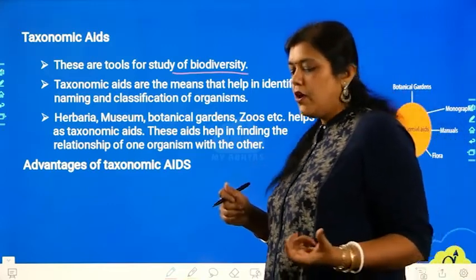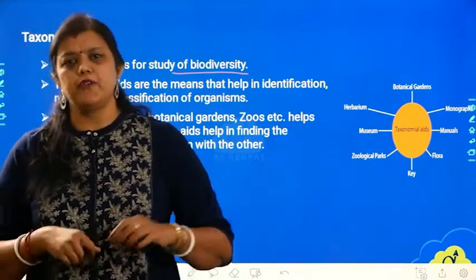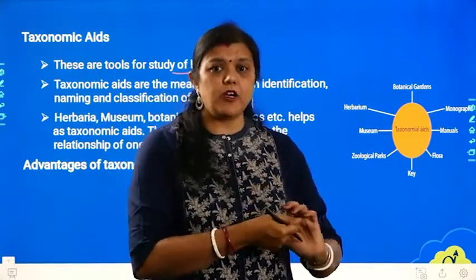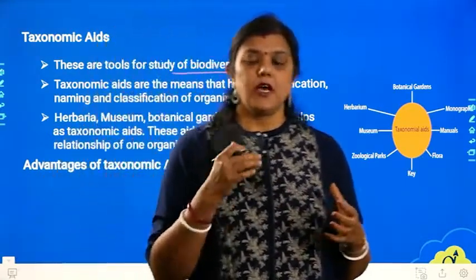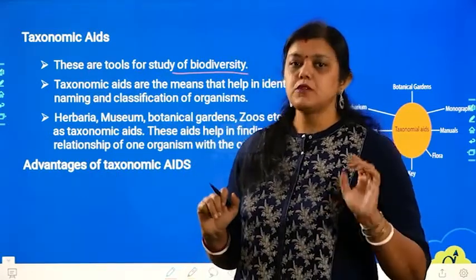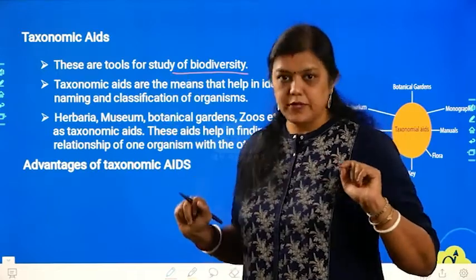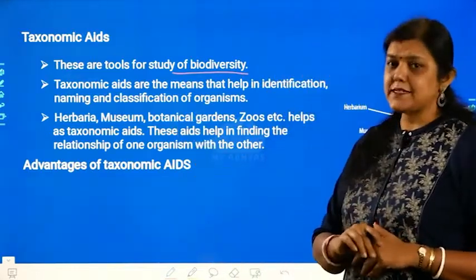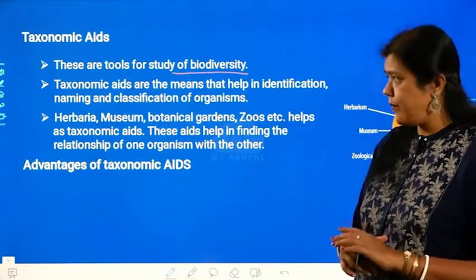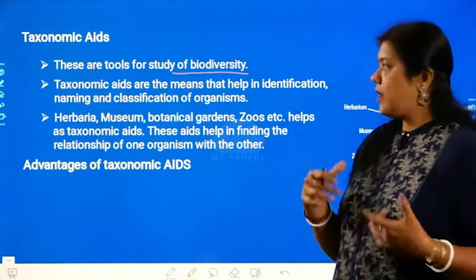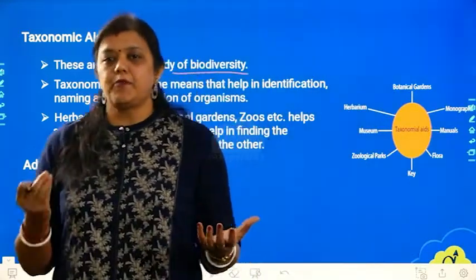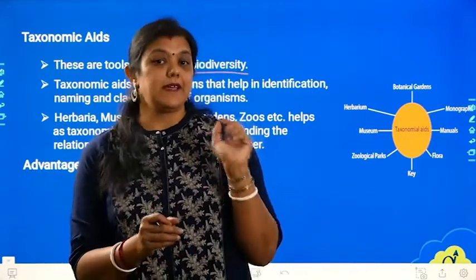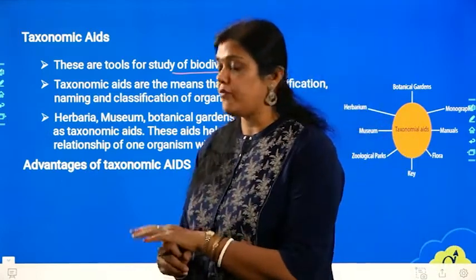Just as you need a screwdriver or plier to fix furniture, these tools help you study biodiversity. Taxonomic aids are the means that help in identification, naming, and classification of organisms. They assist in the complete process of taxonomy — classifying, identifying, and naming an organism.